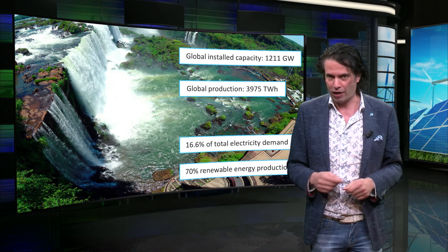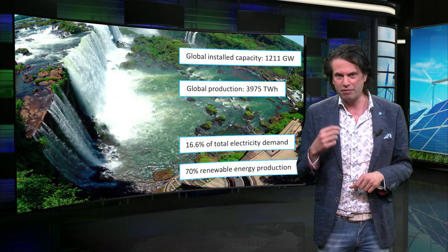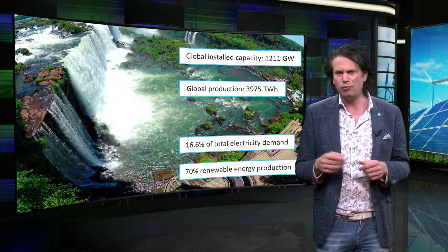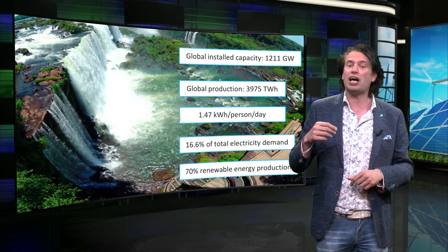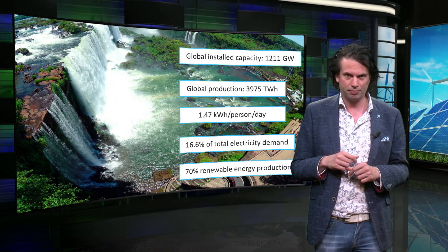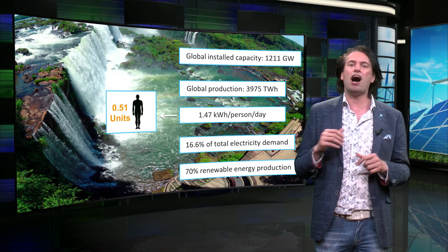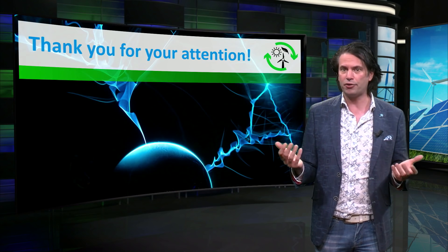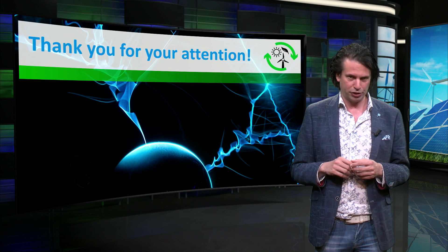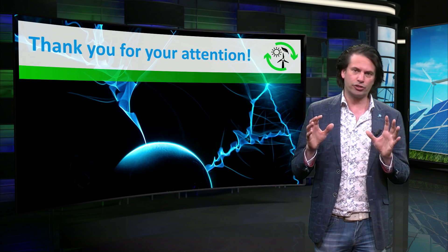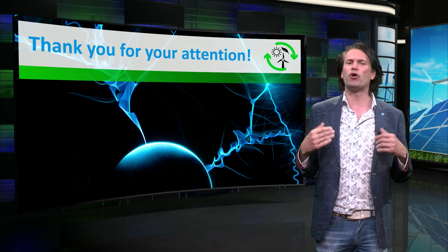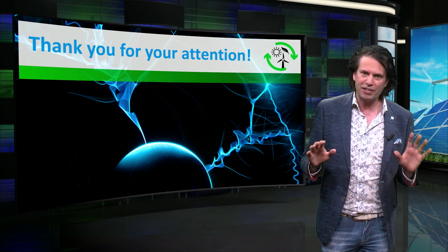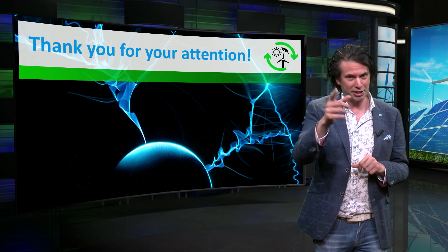This represents approximately 16.6% of the global electricity demand and about 70% of all renewable electricity. We can also express the production of hydroelectricity in our own units. If we divide it by the global population of 7.4 billion people and the days in a year, we get 1.47 kWh per person per day of electricity — slightly more than half a human unit introduced last week. Estimations for the global potential of hydro go up to 25% of global energy use. In the next video we will look into the physical potentials of wind energy.